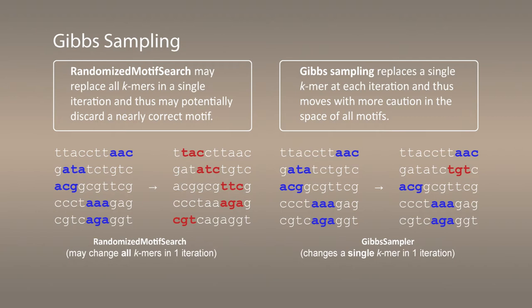Gibbs sampler is more cautious. It actually changes at every step only one of the chosen motifs. The slide shows the key difference between randomized motif search and Gibbs sampler.